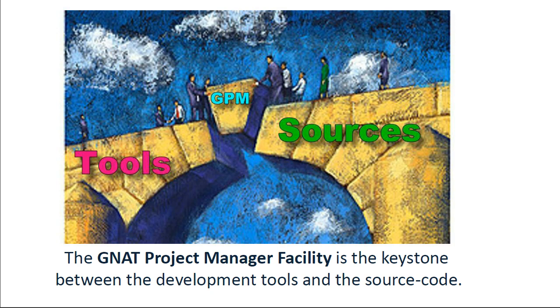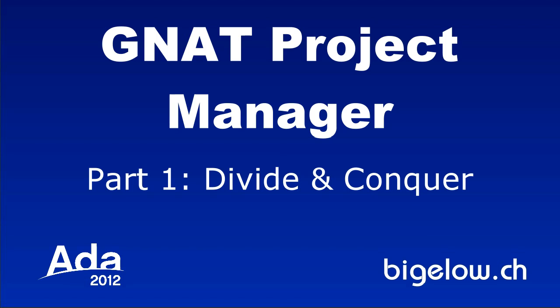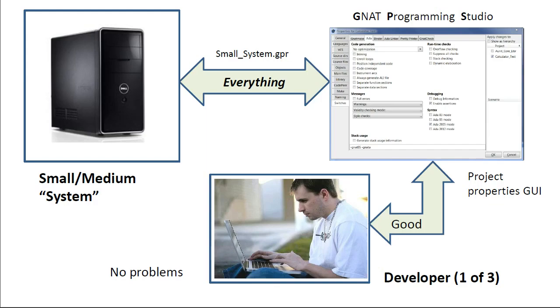Let's get started. Part 1: Divide and Conquer. With the computing power available in today's PCs, the GANAP development environment can easily handle applications consisting of several thousand lines of code. For small to medium sized systems, the Project Properties GUI is all you should need to create and configure project files to your requirements. In other words, there should be no need to manually edit the GANAP project file.